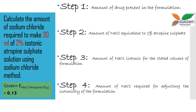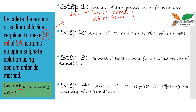Our first example: calculate the amount of sodium chloride required to make 30 ml of a 2% isotonic atropine sulfate solution using the sodium chloride method. The sodium chloride equivalent of the drug is provided. In step 1, we find the amount of drug present in the formulation. A 2% solution means 2 grams in 100 ml, so in 30 ml the amount of drug present is 0.6 grams of atropine sulfate.